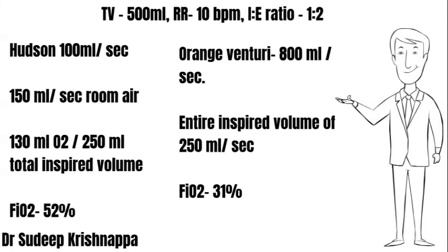This translates to an FiO2 of 52%. The orange Venturi, by contrast, generates a total flow of 800 mL per second. The flow required during each second of inspiration is only 250 mL, so the FiO2 continues to remain at 31% because the total flow is far in excess of what is needed.